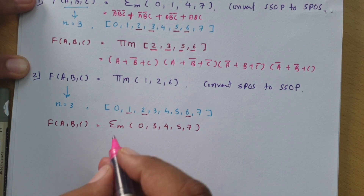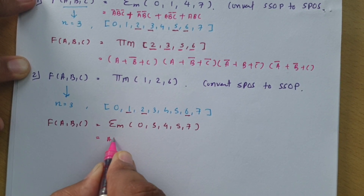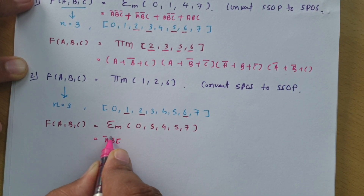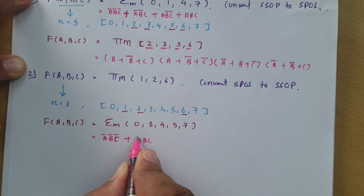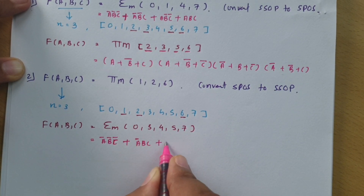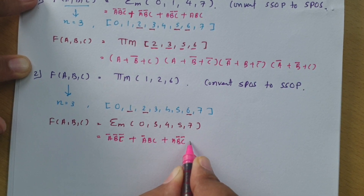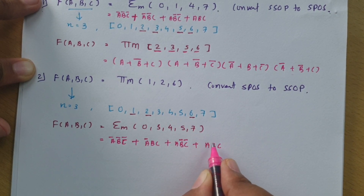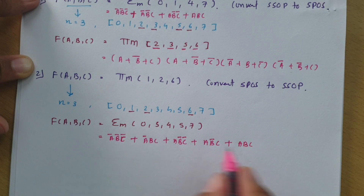Sometimes you need to represent this in form of variables. For minterm 0: a, b, c with bits 0,0,0 gives a bar b bar c bar. For 3: 0,1,1 gives a bar b c. For 4: 1,0,0 gives a b bar c bar. For 5: 1,0,1 gives a b bar c. For 7: 1,1,1 gives a b c. This is how we represent the SSOP form.